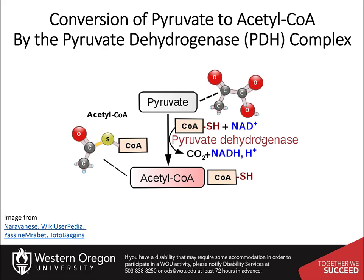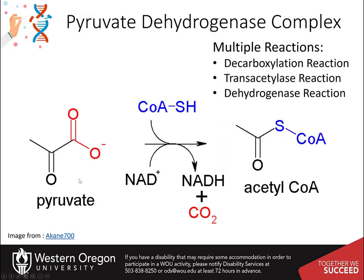Within this reaction, pyruvate and coenzyme A are substrates that end in producing a molecule of carbon dioxide and acetyl-CoA. A molecule of NADH is also produced during this process. This protein complex mediates the conversion of pyruvate to acetyl-CoA. To complete this conversion, three enzymatic processes must occur: first, a decarboxylation of the pyruvate molecule to release carbon dioxide; then a transacetylase reaction that moves the acetate functional group of pyruvate to the coenzyme A carrier to produce acetyl-CoA; and during this process, electrons are harvested from the substrates and transferred to the NAD carrier to form NADH.